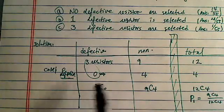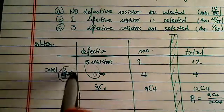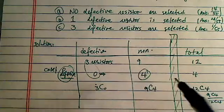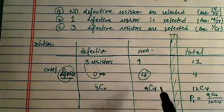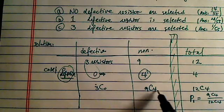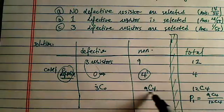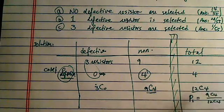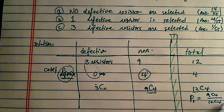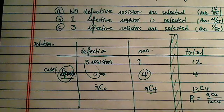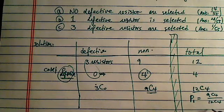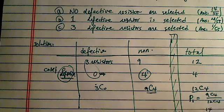Once again, since I want 0 defective, I got to choose all 4 of the resistors from the non-defective one. So I have 9 choosing 4 ways to choose. And out of the 12 altogether, I have 12 choose 4. So if you punch this one into your calculator, you'll have a 14 over 55 probability.